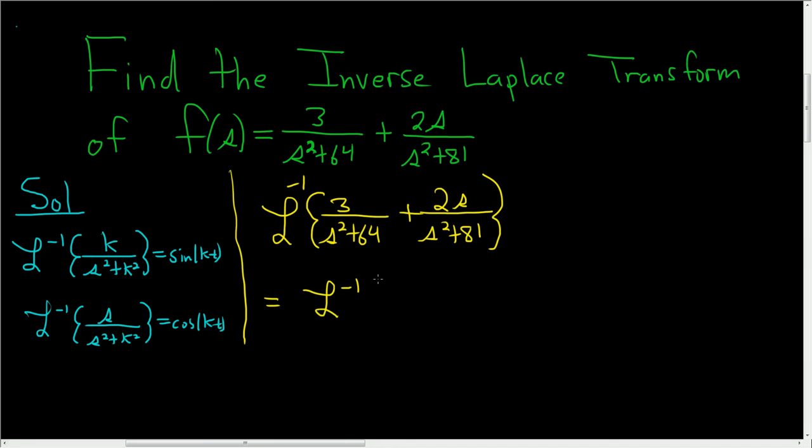So this is the inverse Laplace of, and I'll pull the 3 out, so we end up with 1 over s squared plus 64, and then plus, and here we can pull the 2 out, so we get the inverse Laplace of s over s squared plus 81.